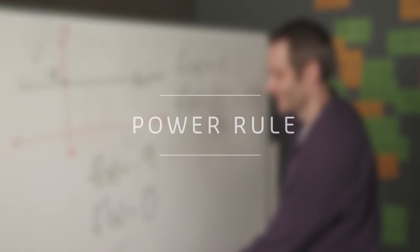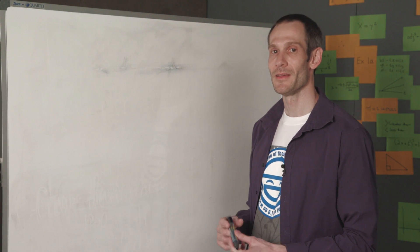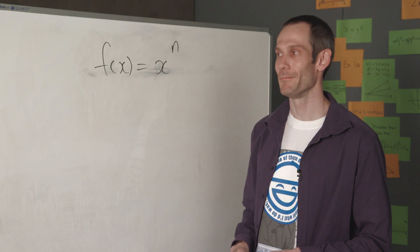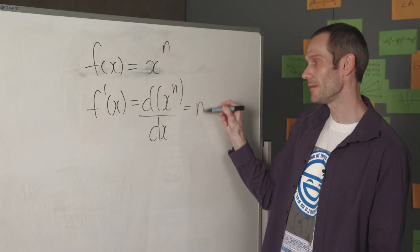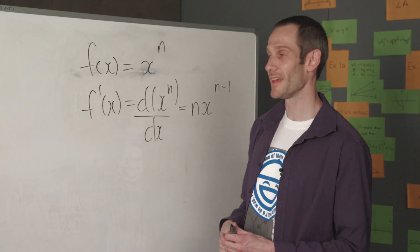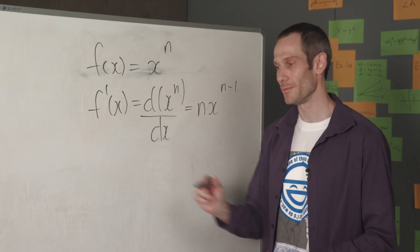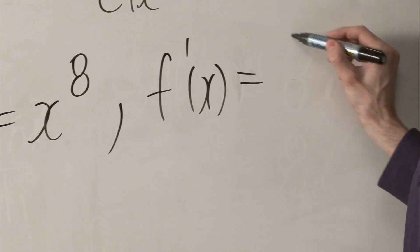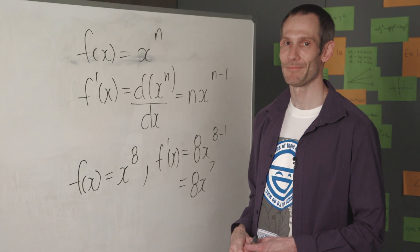Our next rule is the power rule. The power rule of differentiation allows us to differentiate power functions — for example, polynomial functions. So let's say I was given a power function f of x equals x to the power of n, where n can be either an integer value or a real value. The power rule tells us to differentiate x to the power of n, which equals n multiplied by x to the power of n minus 1. That is, we bring our power down to the front, then reduce 1 from the power. For example, to differentiate x to the power of 8, we bring the indice down to the front and reduce 1 from the power, giving us 8 multiplied by x to the power of 7.